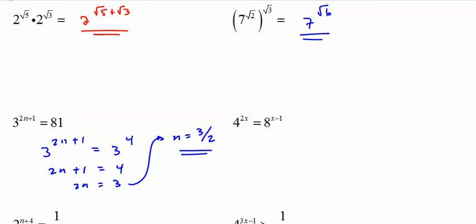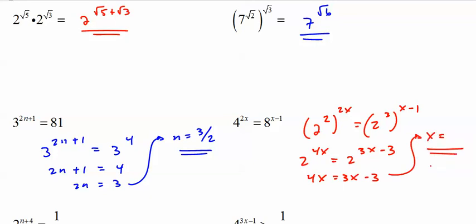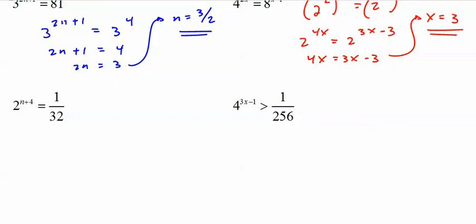Same thing over here. I actually put everything in the same base: 2 squared to the 2x equals 2 to the 3rd to the x minus 1. 2 to the 4x equals 2 to the 3x minus 3. 4x equals 3x minus 3, x equals 3. Highly recommend checking your work at this point. In the interest of time, I'm just going to keep moving. This one gets people a little bit because they don't know what to do with that on the bottom, but you have to remember that's just 2 to the 5th to the negative 1st. So 32 to the negative 1st is 1 over 32, meaning n plus 4 equals negative 5, n equals negative 9.